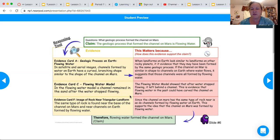This matters because since the channel on Mars has the same type of rock near it as channels formed by flowing water on Earth, this supports the idea that the channel on Mars was formed by flowing water. And then you kind of really restate the claim, therefore flowing water formed the channel on Mars.